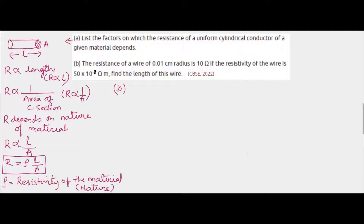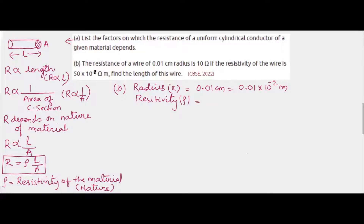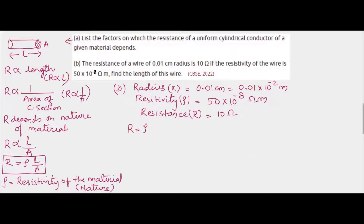Now for part two: we are given the radius of the conductor, r = 0.01 centimeter, which is 0.01 into 10 to the power minus 2 meter. The resistivity ρ = 50 into 10 to the power minus 8 ohm meter. The resistance R = 10 ohm.